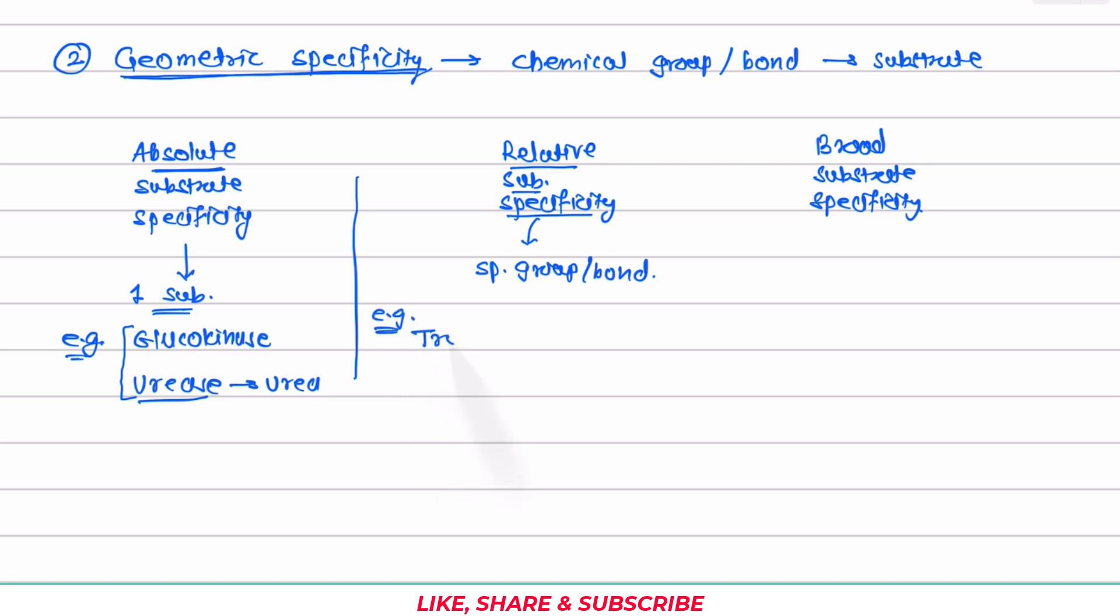The first example is trypsin. Now here trypsin is an enzyme which can break down peptide bond, but it does not break down any peptide bond. Rather, trypsin identifies arginine or lysine. When these amino acids are identified, then the peptide bond which involves these amino acids, only those peptide bonds are broken down.